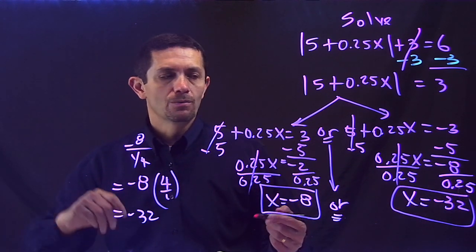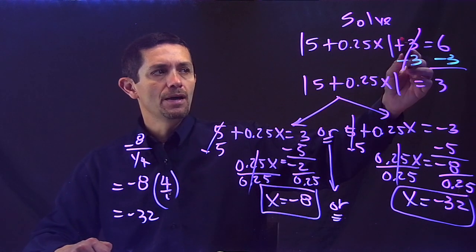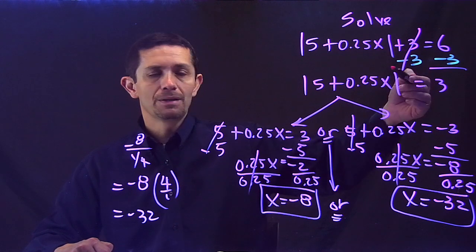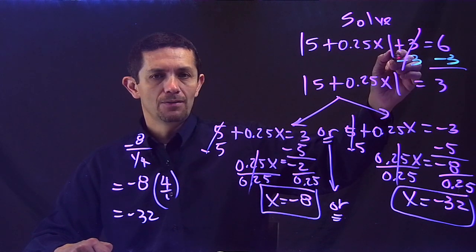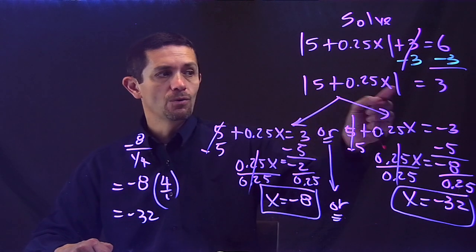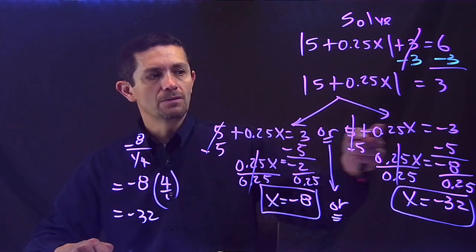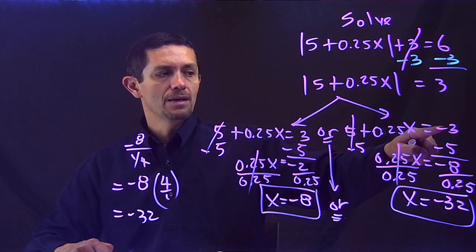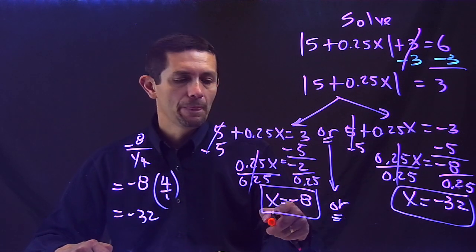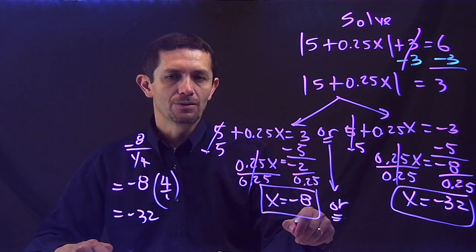So recap. Absolute value, it has something on the outside, adding, subtracting, multiplying, dividing, you have to cancel that first. Cancel, after you cancel, and the absolute is by itself on one side of the equal sign, then you split it in two. One answer has a positive, the other answer has a negative, and from there I just solve for x, and my final answer will be x equals negative 8 or x equals negative 32.